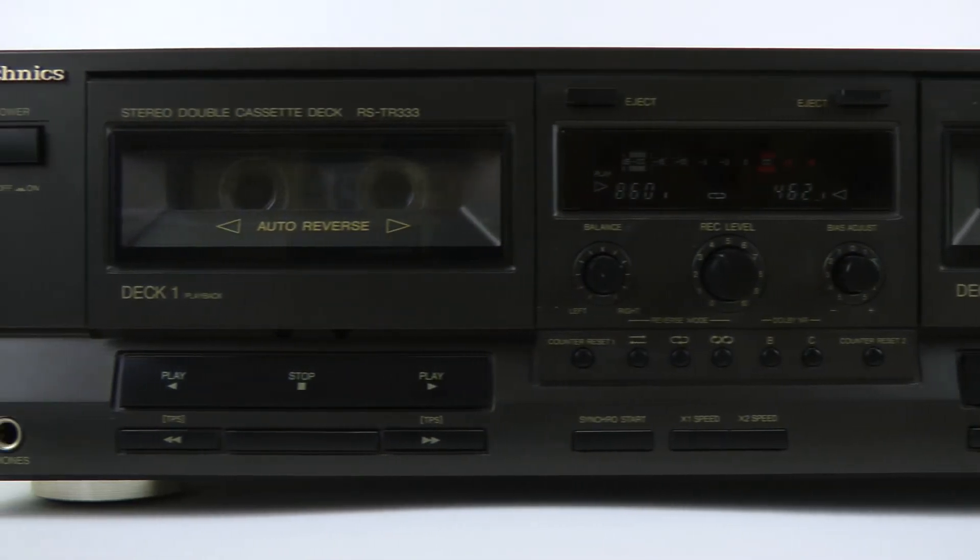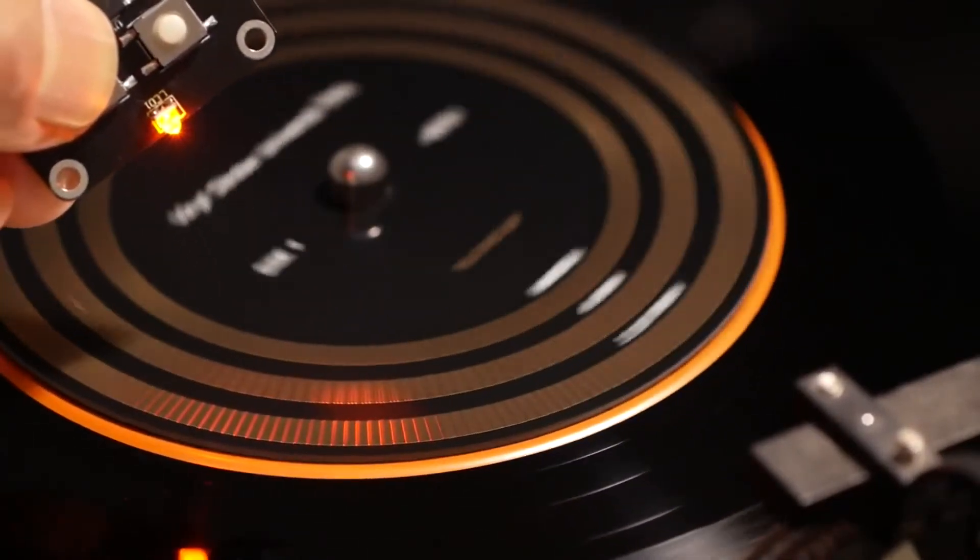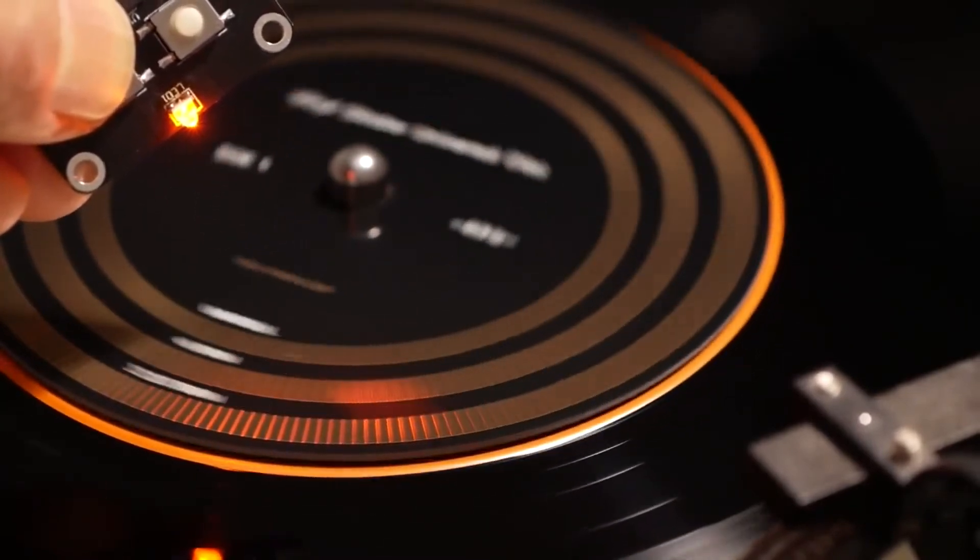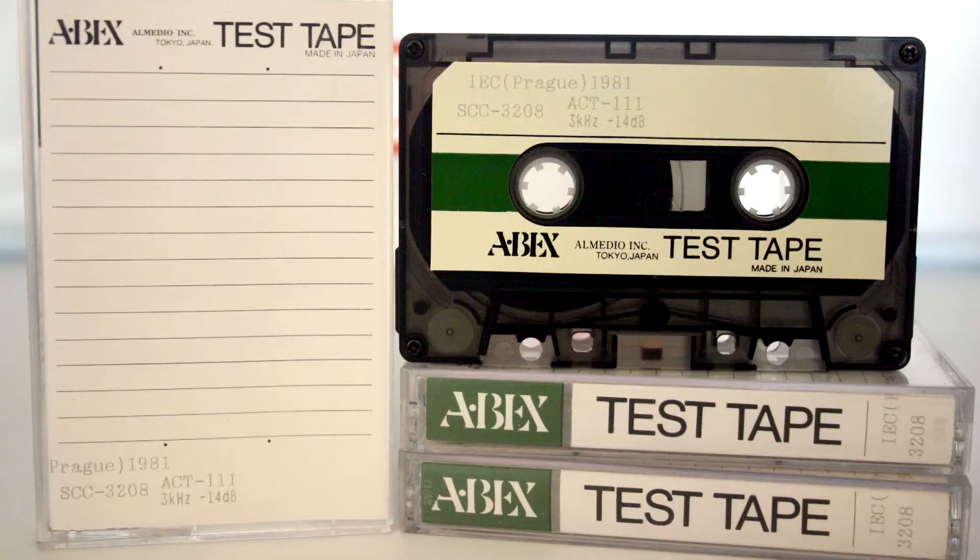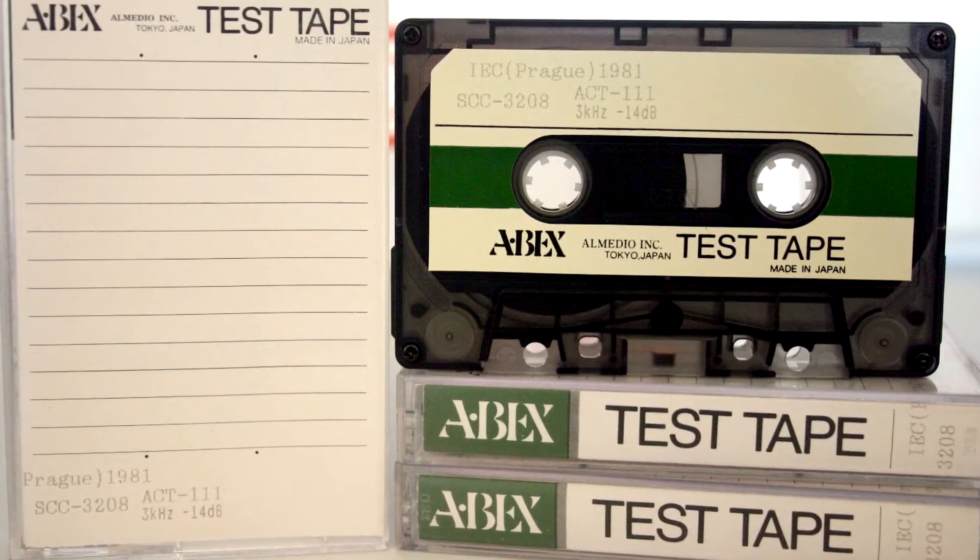Before measuring the irregularity of playback speed, it's necessary to ensure that the speed itself is correct. On a record player, you would adjust rotation speed using markings on the platter. When illuminated by strobe light, the markings should appear stationary. On a tape deck, you would use a tape with test signal recorded on a high-quality machine.